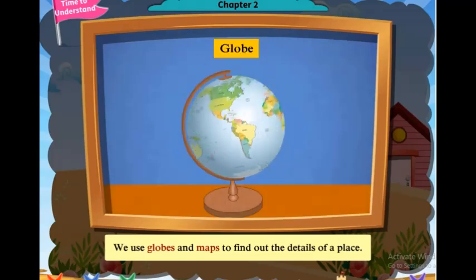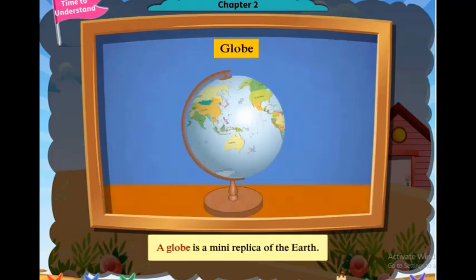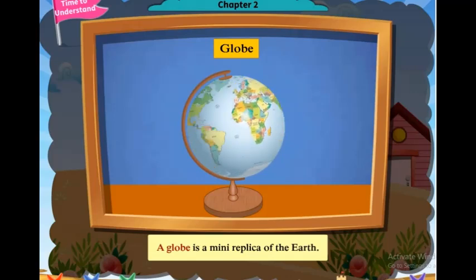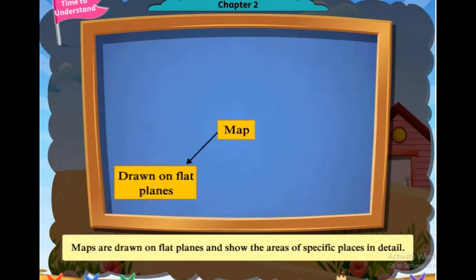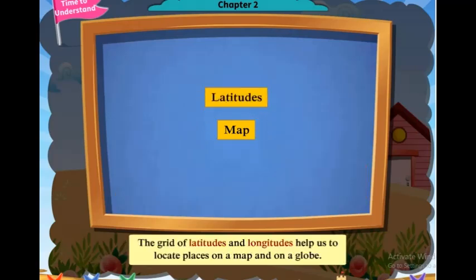We use globes and maps to find out the details of a place. A globe is a mini replica of the earth. Maps are drawn on flat plains and show the areas of specific places in detail. The grid of latitudes and longitudes helps us to locate places on a map and on a globe.